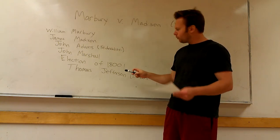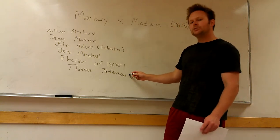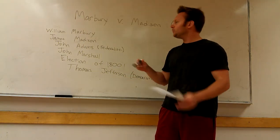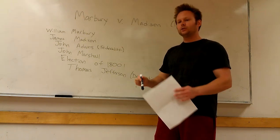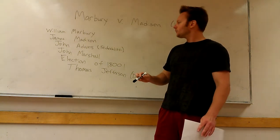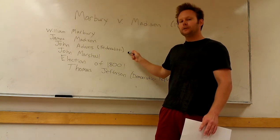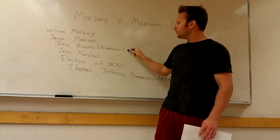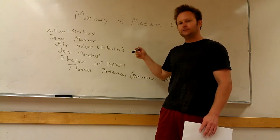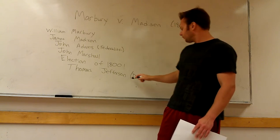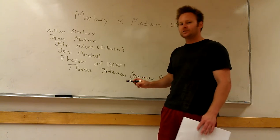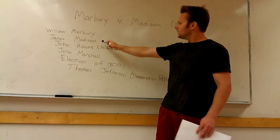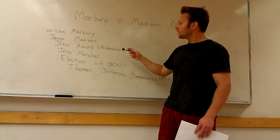The next day, on March 4th, Thomas Jefferson comes in and he notices that the commissions have not physically been delivered to the people who are going to take office. John Adams wanted Federalists with his thoughts and ideology to fill positions in the federal government. Thomas Jefferson, a Democratic Republican, doesn't want that to happen. So he tells the Secretary of State, James Madison, to not deliver the commissions.